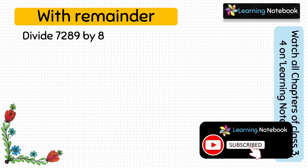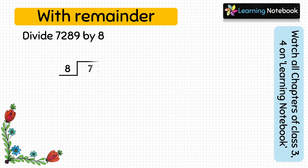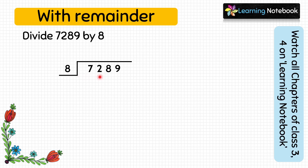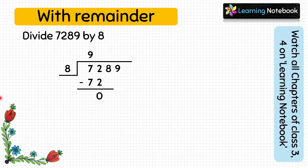The question is: divide 7289 by 8. Let's form a tent and put the dividend 7289 inside the tent and the divisor 8 outside. Take a look at the first digit — it is 7, which is smaller than divisor 8, so we cannot start with the division. Let's take both 7 and 2; we get 72, which is bigger than 8, so we can now start. 8 into 9 equals 72, and 72 minus 72 equals 0.